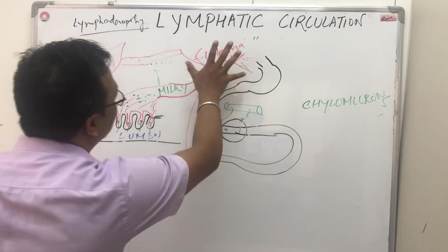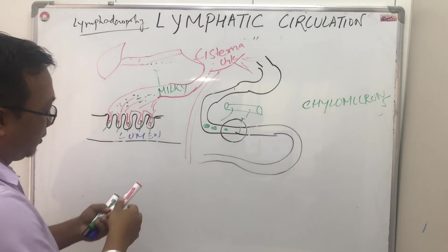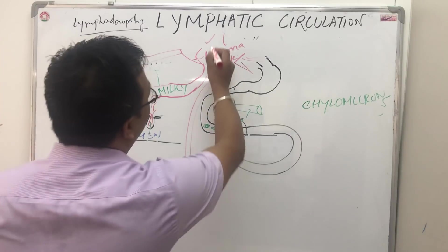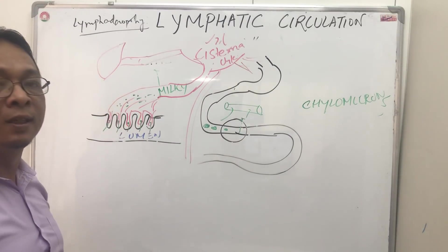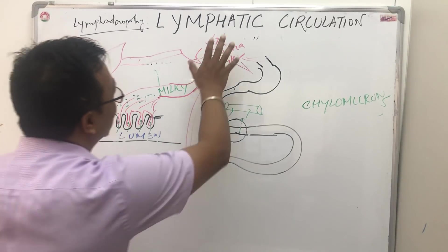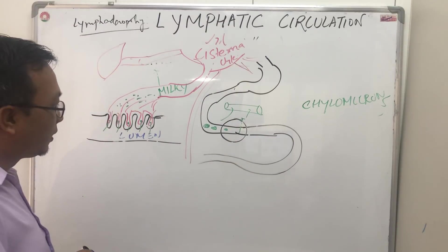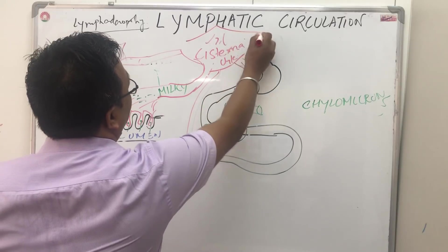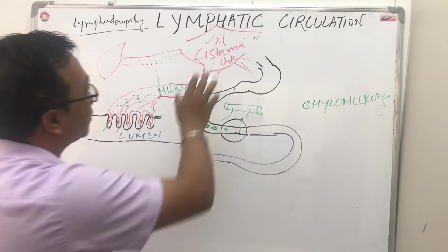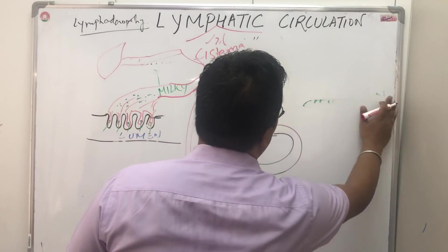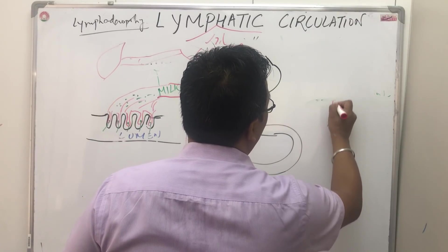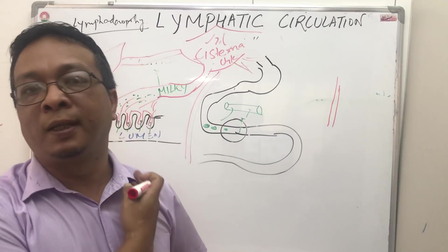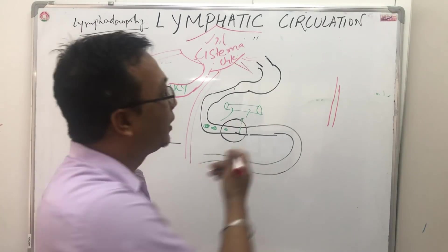From the cisterna chyli, one efferent vessel is sent out called the thoracic duct. The thoracic duct comes out of the cisterna chyli just below the diaphragm and travels up to the left side of the neck.